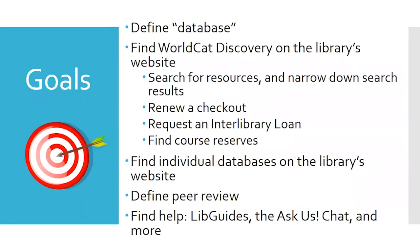This course is meant to be a practical guide to using the library's resources for general research. You can use this in any specialty. The goals are to define database, find WorldCat Discovery on the library's website, use it to search for resources and narrow down results, renew a checkout, request an interlibrary loan, find course reserves, find individual databases, define peer review, and find help when you need it.